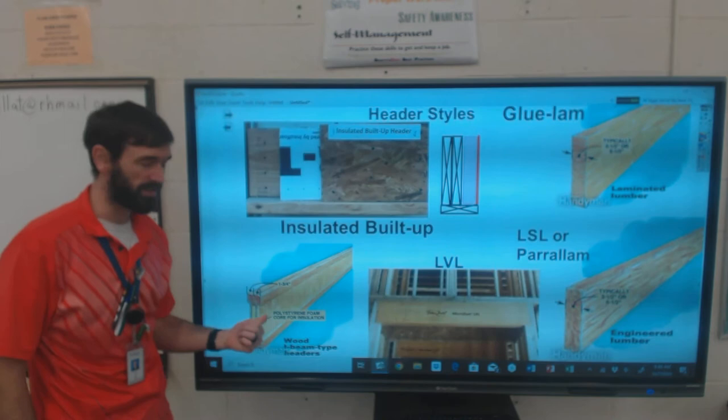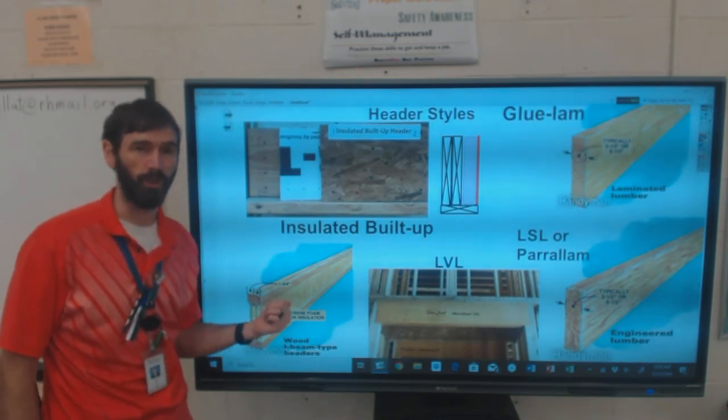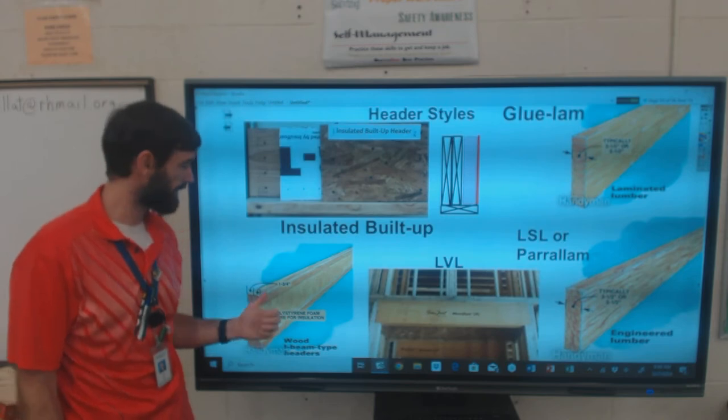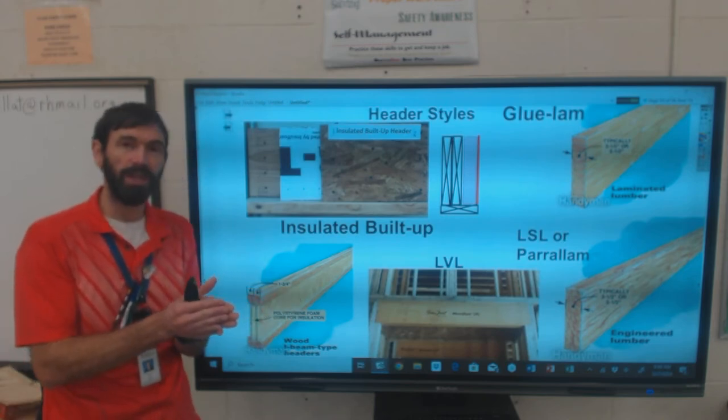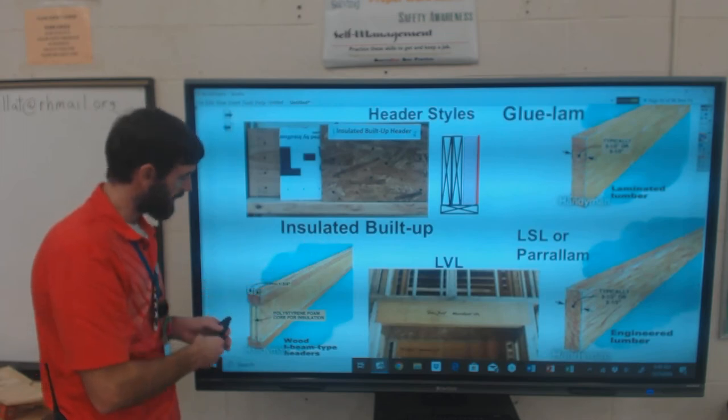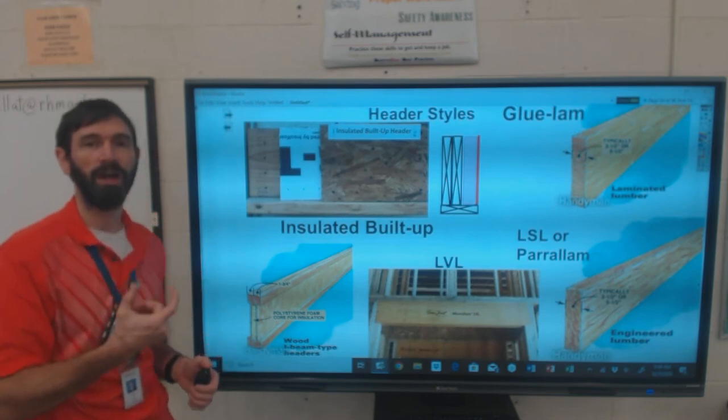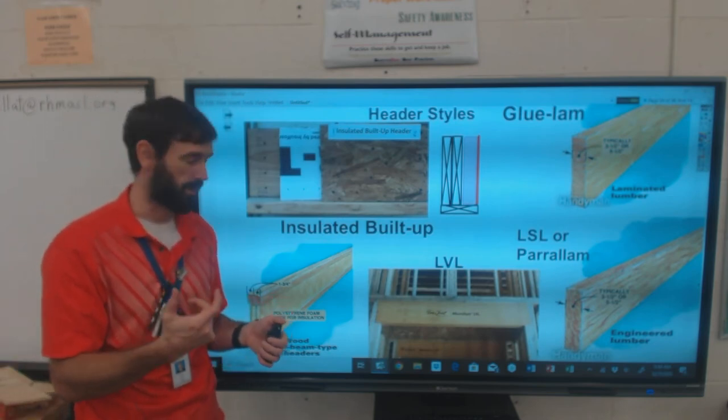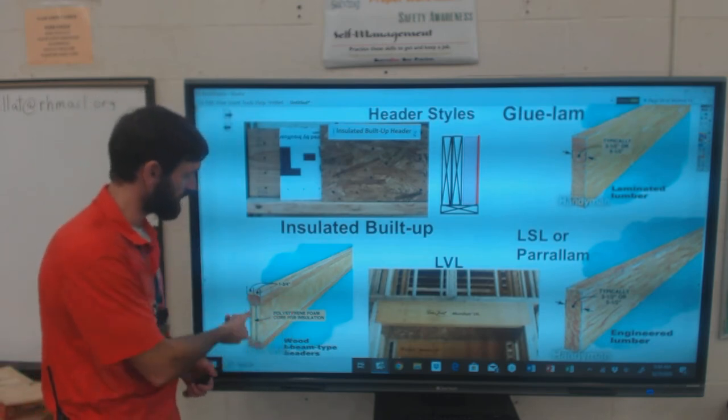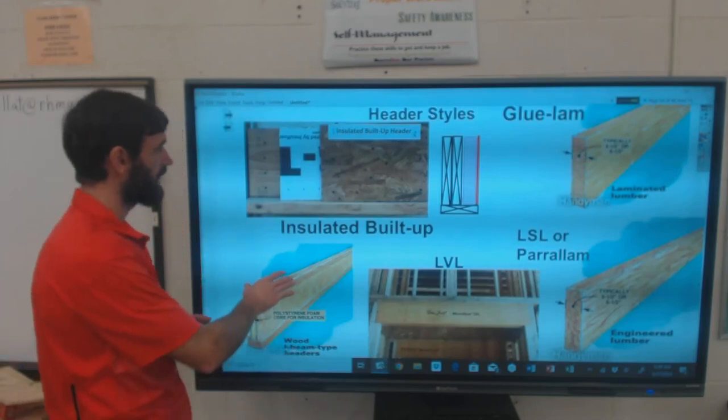Another one that's newer on the scene is a doubled up wooden I-beam joist, a TGI joist. Put two of them together and it's plenty strong for your header. But the neat thing is they'll spray foam the inside of it and that way it's insulated with several inches of insulation, makes it really warm and really strong.